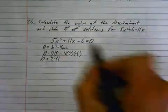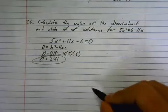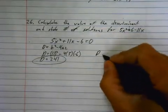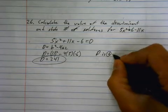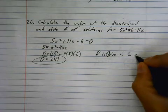Now, state the number of solutions. If the discriminant is positive, and it's underneath the square root in the quadratic formula, it means I'm going to get two solutions. So, d is positive, therefore, two solutions.